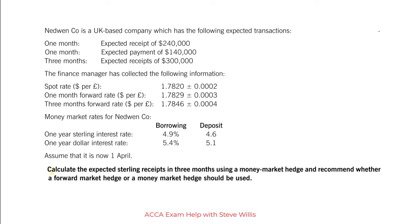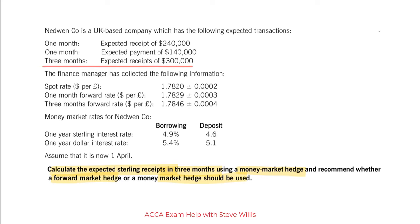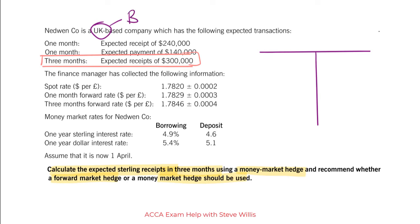Our objective is to calculate the expected sterling receipts in three months using the money market hedge, and we'll compare this to the forward contract that the bank would give us, and we will recommend which one we should use. What I always do when I am doing any foreign exchange hedging question is draw a T-account to represent my balance sheet, and we have to identify what is our home or base currency — and we are UK, that is our home or base currency.